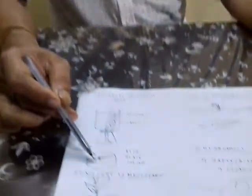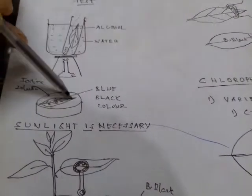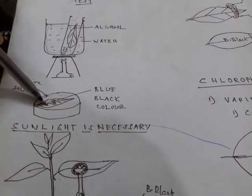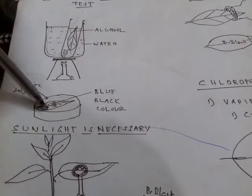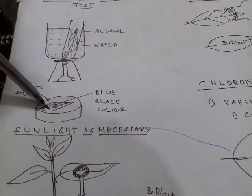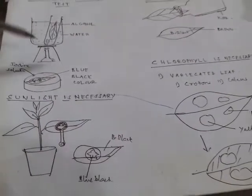After boiling in alcohol the leaf becomes brittle, so the next step is to dip it in warm water to soften it again. The softened leaf is spread out evenly in a small petri dish, and a few drops of iodine solution are added. Wherever starch is present, a blue-black color will appear — the leaf may not contain starch in all parts, but wherever starch is present it will show blue-black.